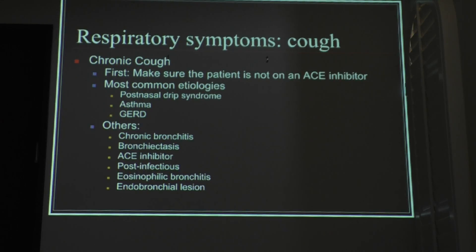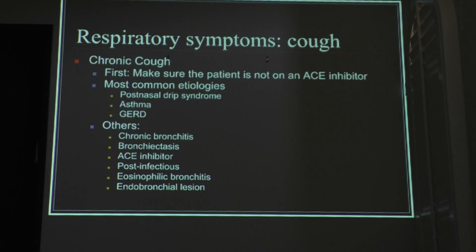Number one, the patient requests antibiotics. Number two, the easier thing for doctors is just to prescribe them. But number three, we know it's evidence-based that we don't prescribe them. So what do you tell the patients? You give them a little bit of antitussive medication — you can give them codeine, a bronchodilator if they're wheezing, tell them to stay warm, buy a humidifier. You can also prescribe Tesalon, which is benzonatate, a centrally acting cough suppressant.